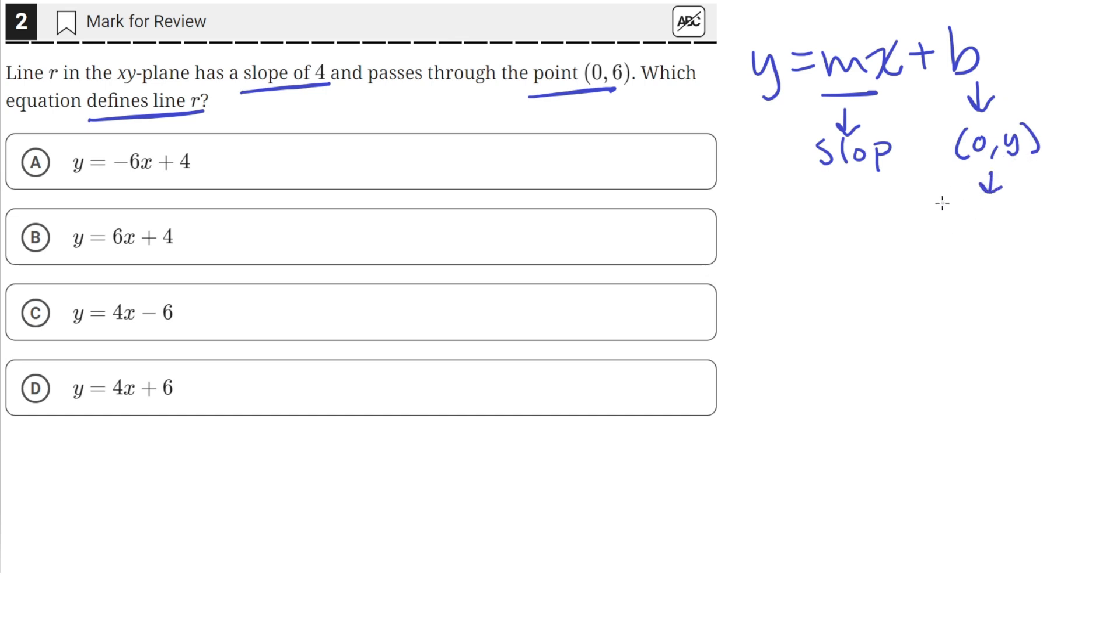The y-intercept is the coordinate on the line when x equals 0. We're already given that piece of information because the line passes through the point (0,6).